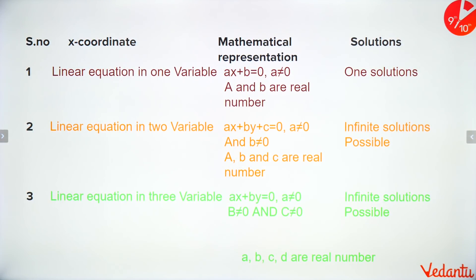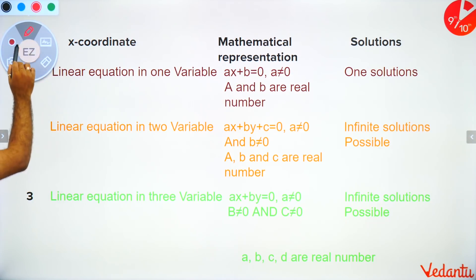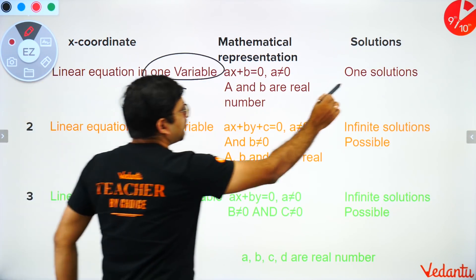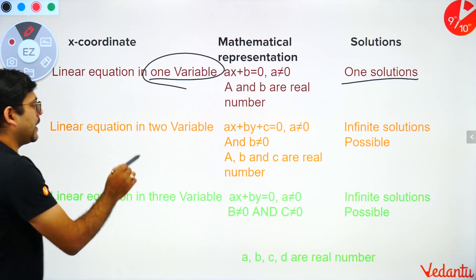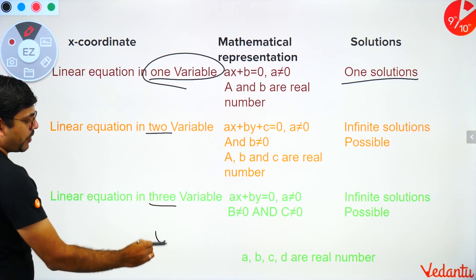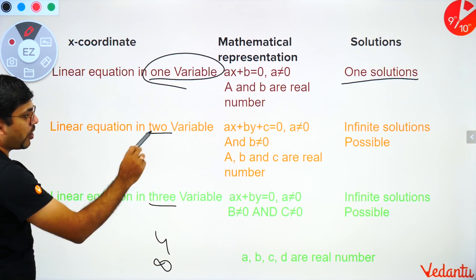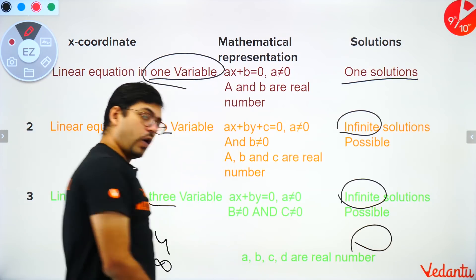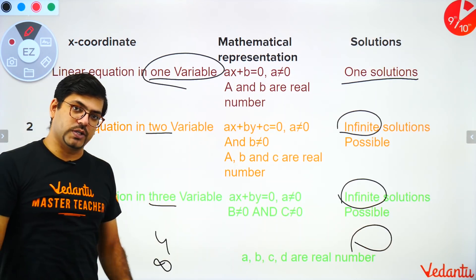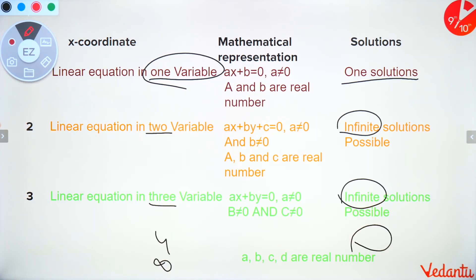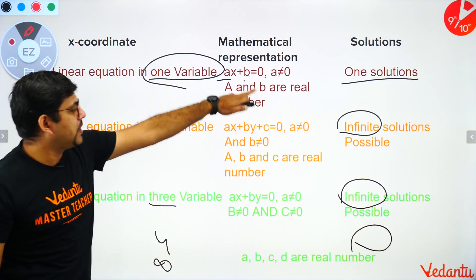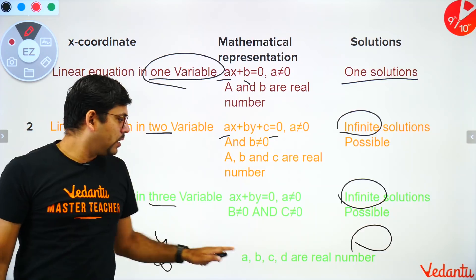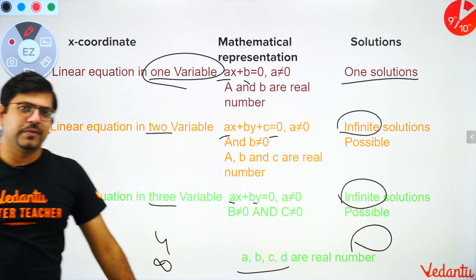To summarize: a linear equation in one variable always has one solution. But if you have two variables, three variables, four variables, or infinite variables, the number of solutions will always be infinite. Please take note of this. Also, everywhere in these formulas, a, b, and c are constants.